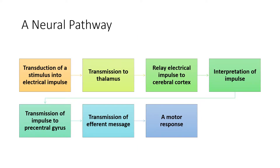Moving on from all the different subdivisions, let's look at a neural pathway. It all begins with the transduction of a stimulus into an electrical impulse. That electrical impulse is transmitted to the thalamus, and the thalamus acts as a relay center. From the thalamus, depending on the type of signal and the different area it's associated with, that impulse is relayed to a specific area of the cerebral cortex. If it's involved in auditory function, for instance, it's going to be relayed to the primary auditory cortex, and it is there that interpretation of the impulse takes place.